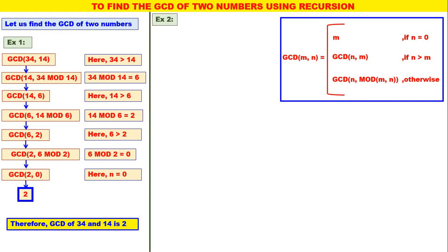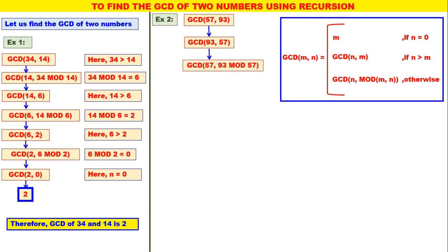Let us take one more example: GCD of 57, 93. Here 57 is smaller than 93. Therefore, exchange — call GCD of 93, 57. Now 93 is bigger than 57. In GCD of 93, 57, the second parameter is not equal to 0, and 93 is greater than 57. Therefore, this will call GCD of 57, 93 mod 57. What is 93 mod 57? 36.